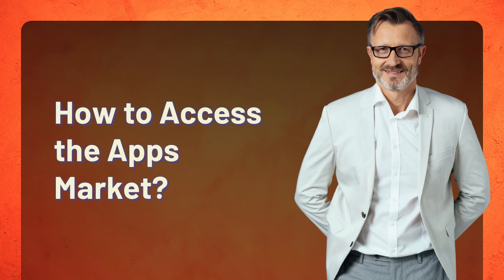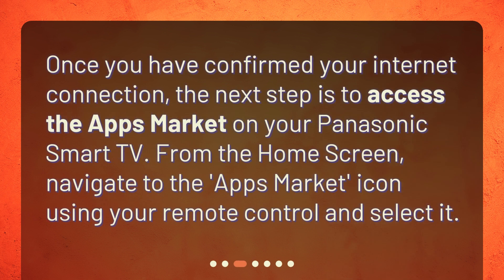Once you have confirmed your Internet connection, the next step is to access the Apps Market on your Panasonic Smart TV. From the home screen, navigate to the Apps Market icon using your remote control and select it.